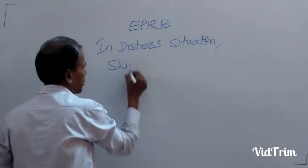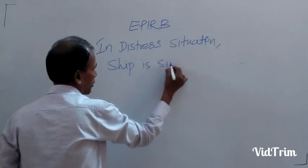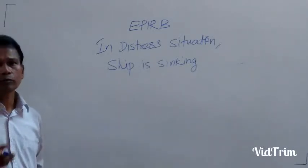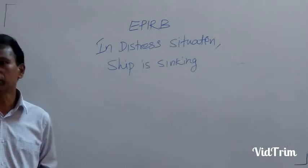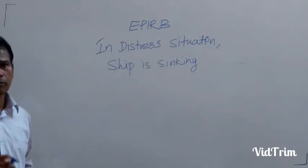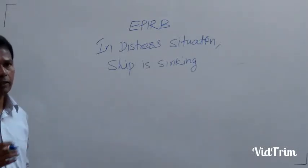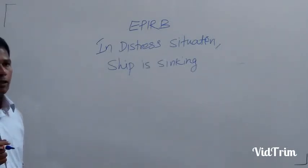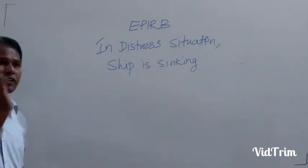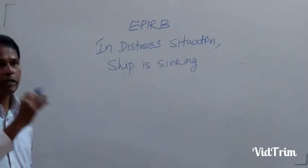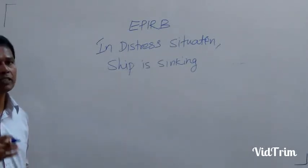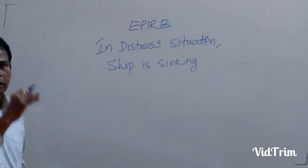In distress situation, ship is sinking. At the depth of 1.5 to 4 meters, the EPIRB is released from the HRU automatically. As per IMO regulations, the EPIRB should be fitted at a height in the ship. It should be released from the HRU at the depth of 1.5 to 4 meters during the distress situation when the ship is sinking.